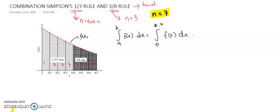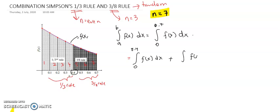You need to combine both rules. So for the first four intervals, you must apply the one-third rule and for the last three intervals, you need to apply the three-eighth rule. Your integration will look like something like this. For the first four intervals, you are now integrating the fx from 0 until 0.4 plus the second integration of fx from 0.4 until the last x or the upper limit of your integration, which is 0.7.